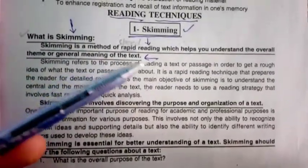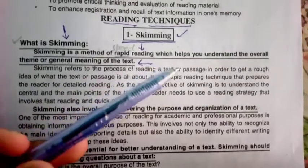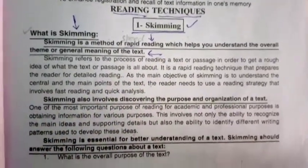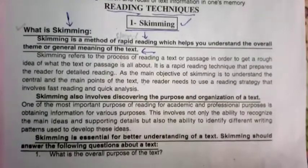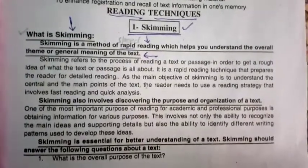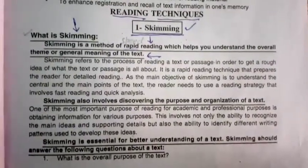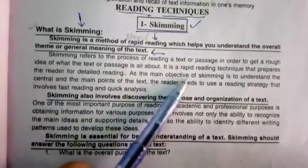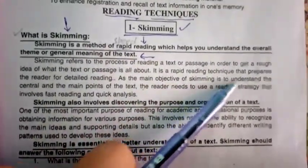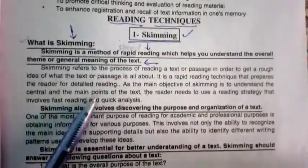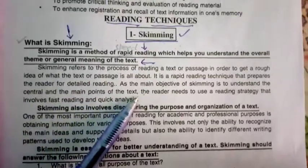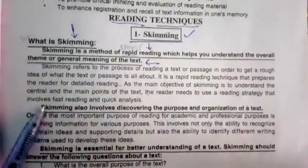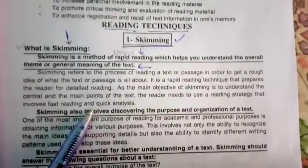Scheming refers to the process of reading a text or passage in order to get a rough idea of what the text or passage is all about. It is a rapid reading technique that prepares the reader for detailed reading. The main objective of Scheming is to understand the central and main points of the text. The reader needs to use a reading strategy that involves fast reading and quick analysis.